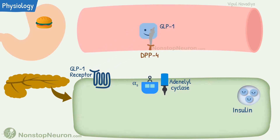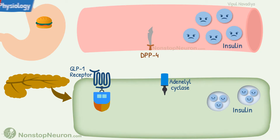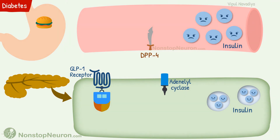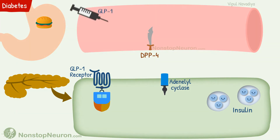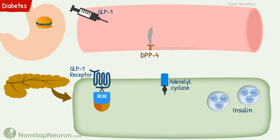Finally, GLP-1 is degraded by the enzyme dipeptidyl peptidase-4, found on the vascular endothelium. So that was the physiology. In diabetes, insulin activity is decreased. But now we know that stimulating the GLP-1 receptor causes insulin release, so we can target this receptor to treat diabetes. One obvious option could have been GLP-1 itself; however, GLP-1 is rapidly inactivated by DPP-4 and its plasma half-life is only 1–2 minutes, so native GLP-1 cannot be used therapeutically. There are two solutions to this problem.